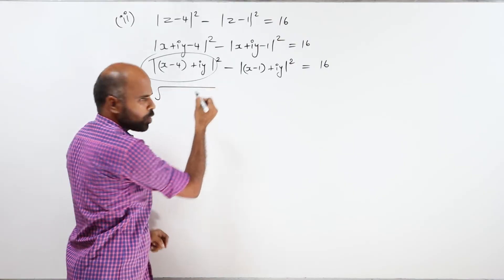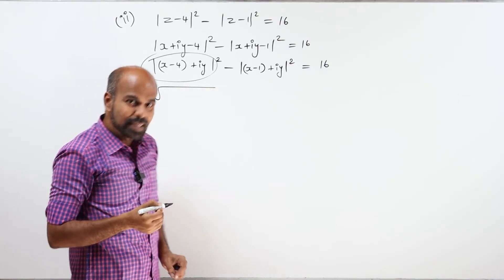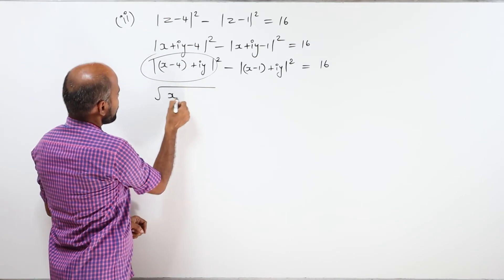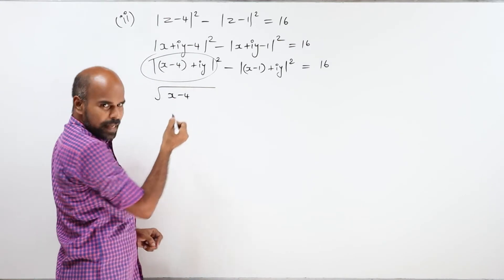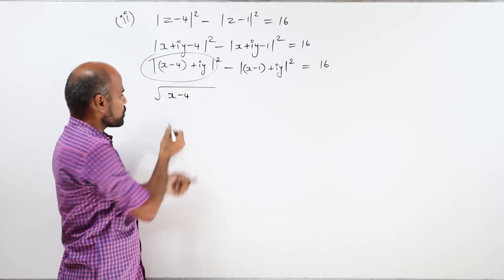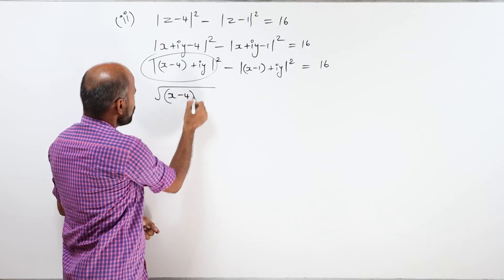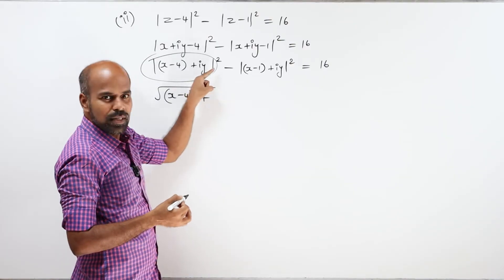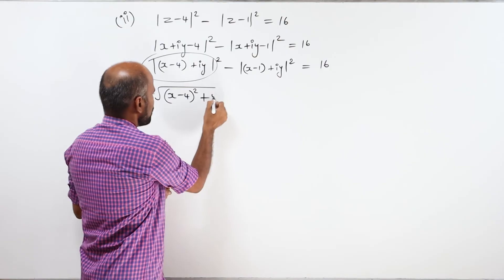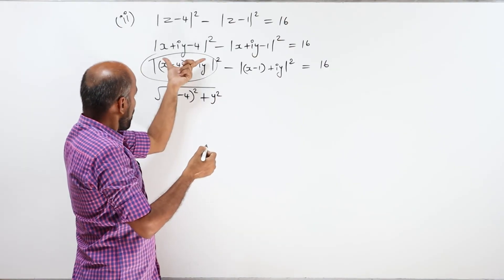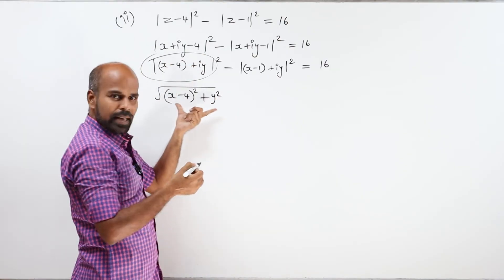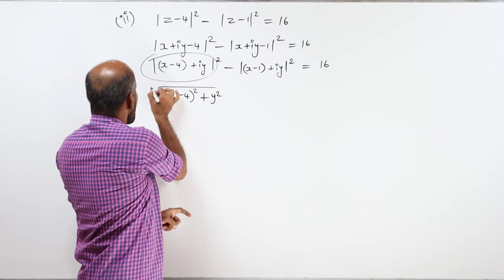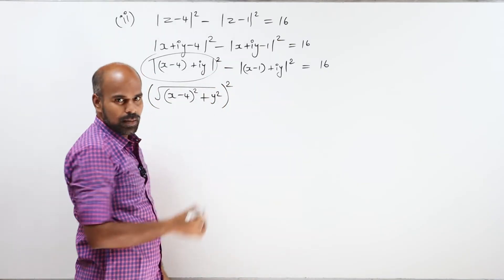Applying the modulus formula — root over real part squared plus imaginary part squared — for the first term: real part is x minus 4, whole squared, plus imaginary part y, squared. That is raised to the power 2.